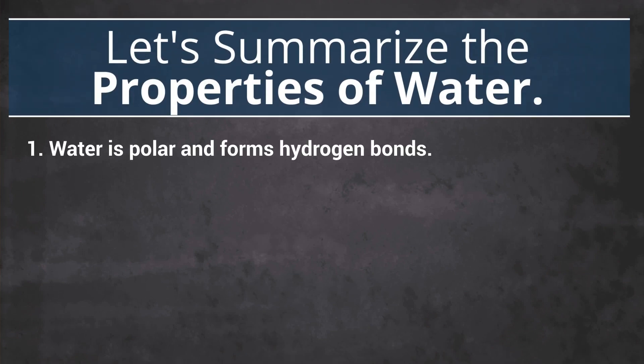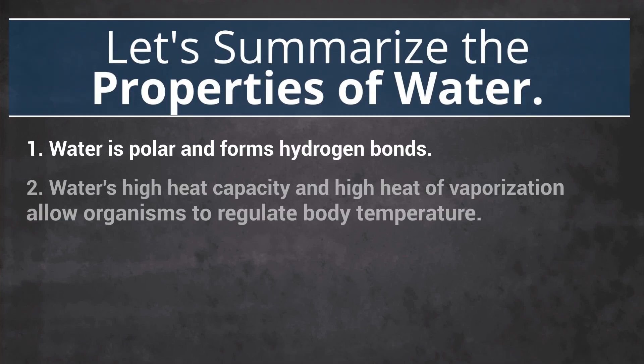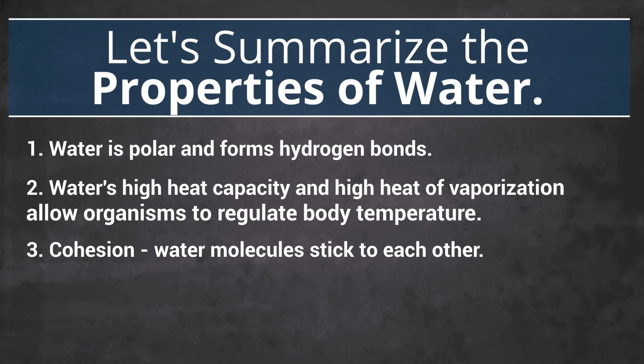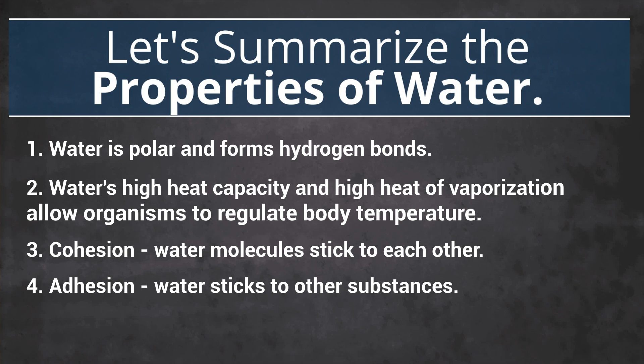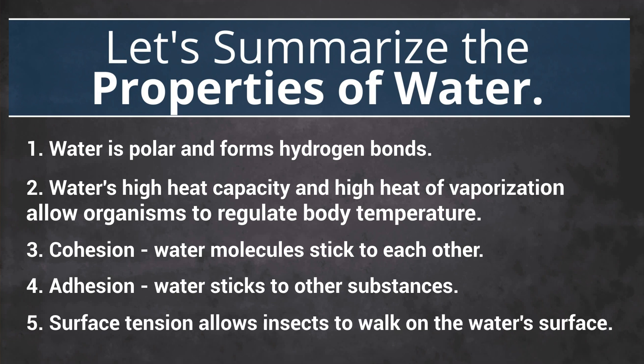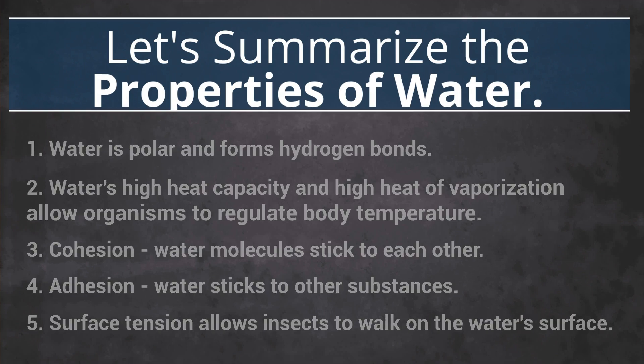The ability of water molecules to form hydrogen bonds results in cohesion — when water molecules stick to each other — adhesion, when water molecules are attracted to other polar or charged objects, and surface tension, which is how insects like water striders can walk on the surface of water. You can check out this video right here to learn more about how that works.